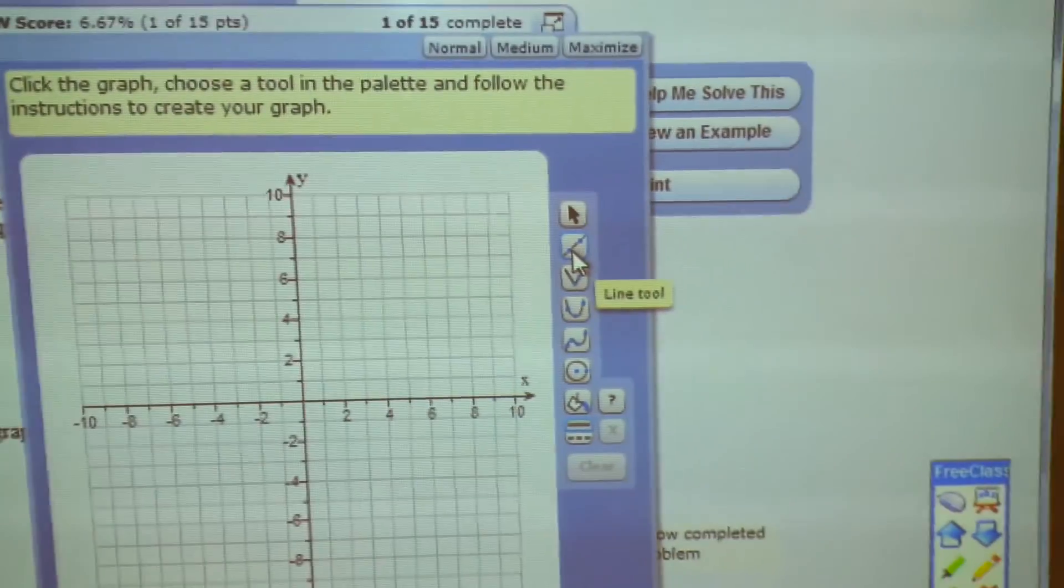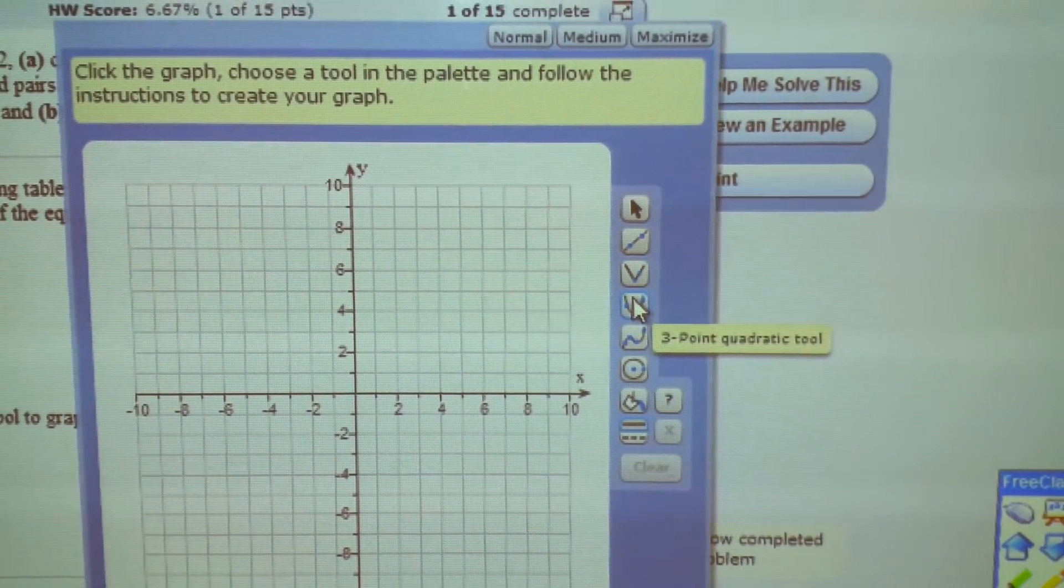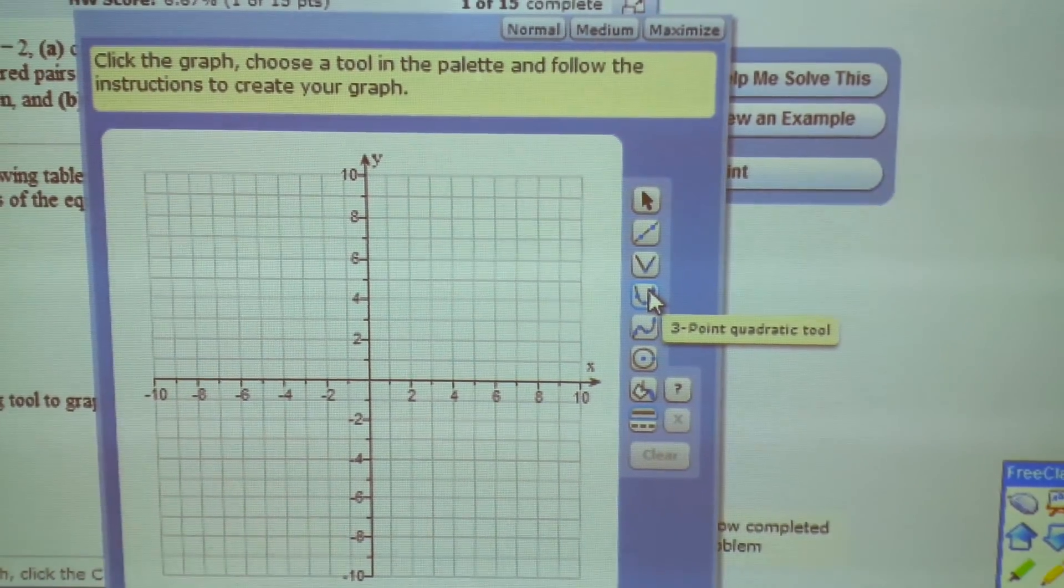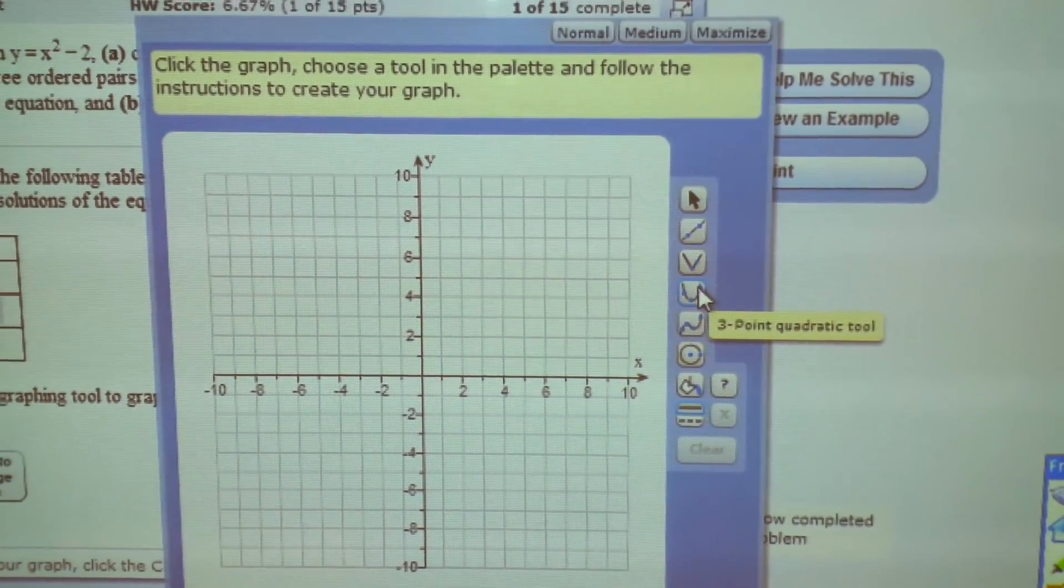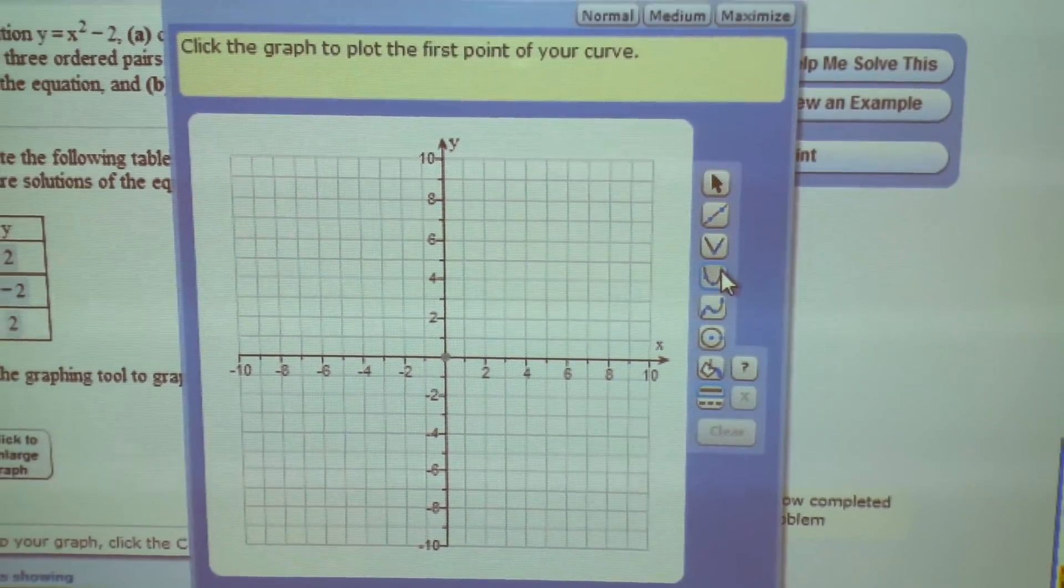If we look at the names. There's the line tool, absolute value tool, three-point quadratic tool. Is that it? We have three points and it's a quadratic x squared. So you click there.